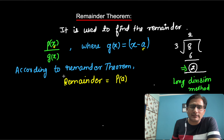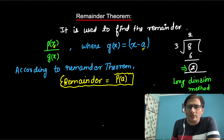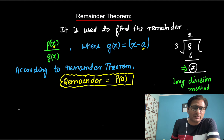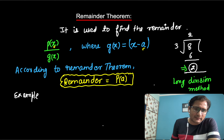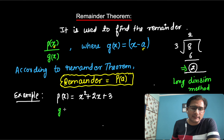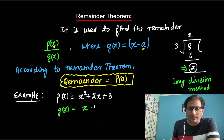So without doing the actual long division method, we can easily find out the remainder using this Remainder Theorem. Let us understand this with the help of an example. Suppose the polynomial is P(x) = x² + 2x + 3, and the divisor is x minus 1.